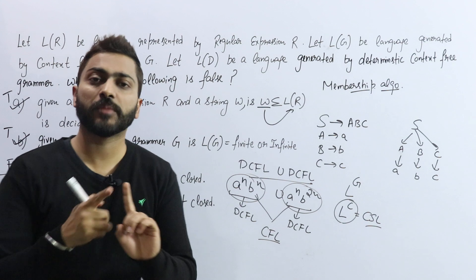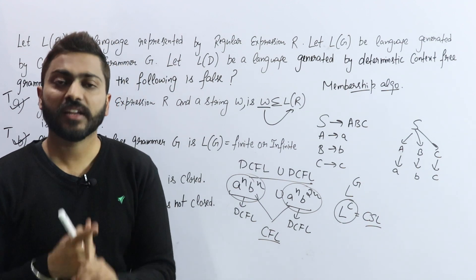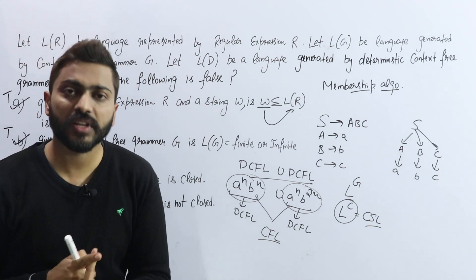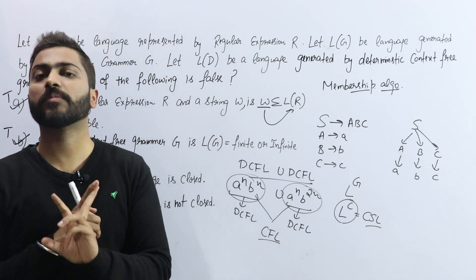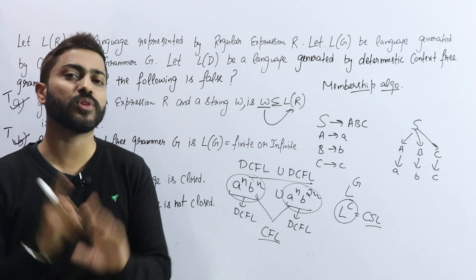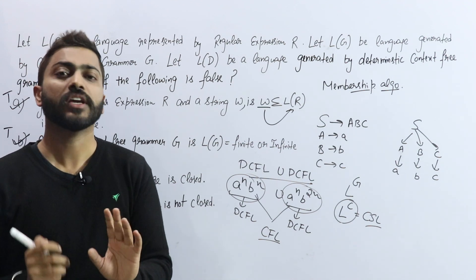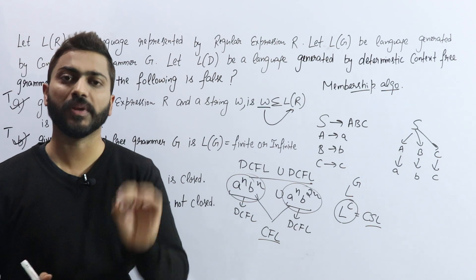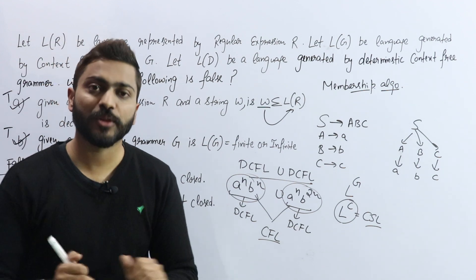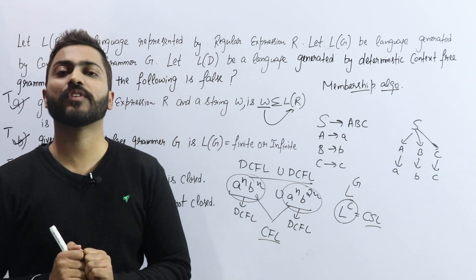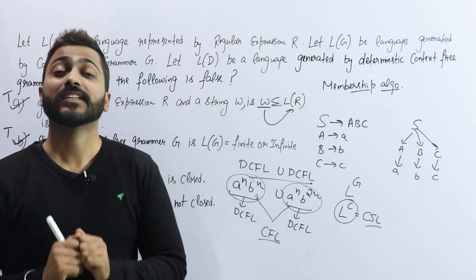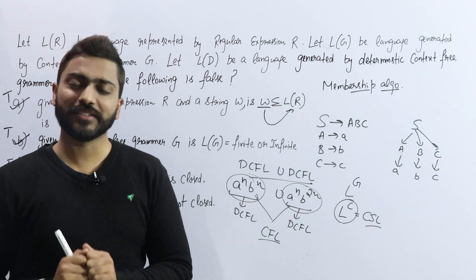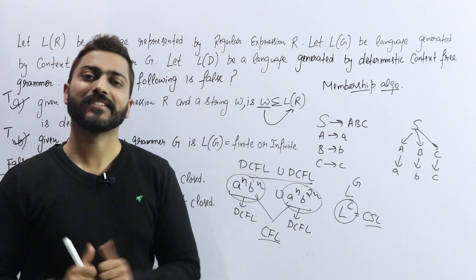So guys, which of the following is false — C is actually the false statement, the others are true statements. I want to tell you that in the exam, you should remember the Closure Properties table and the Decidable-Undecidable table. You will definitely get at least one question on these. Thank you guys. If you like this video, please like and subscribe to my channel.